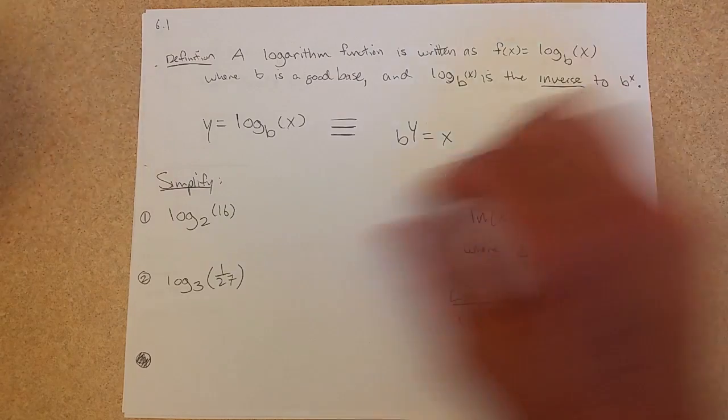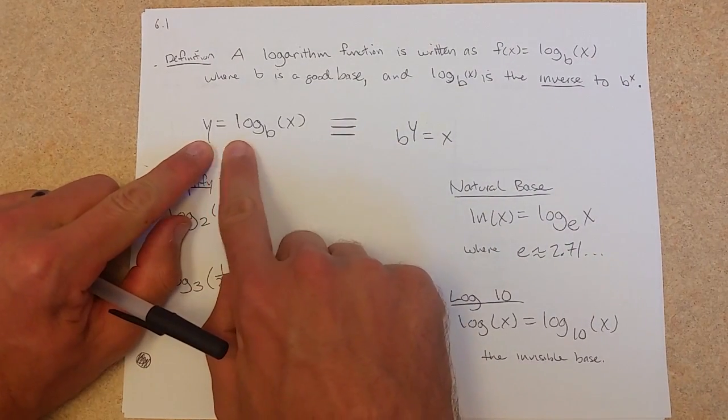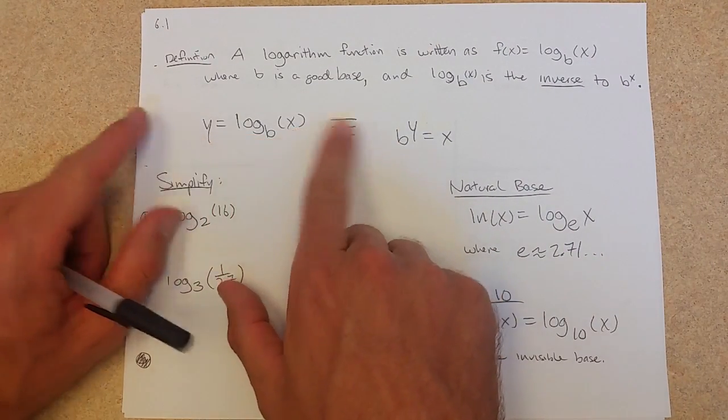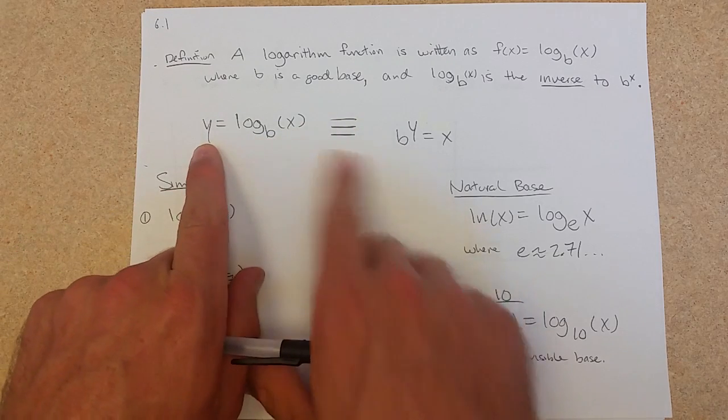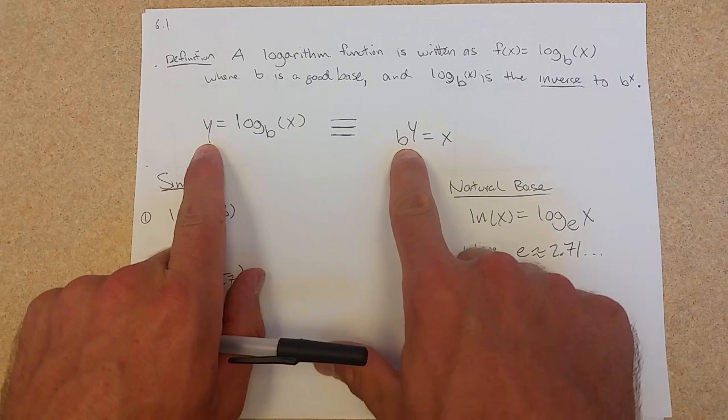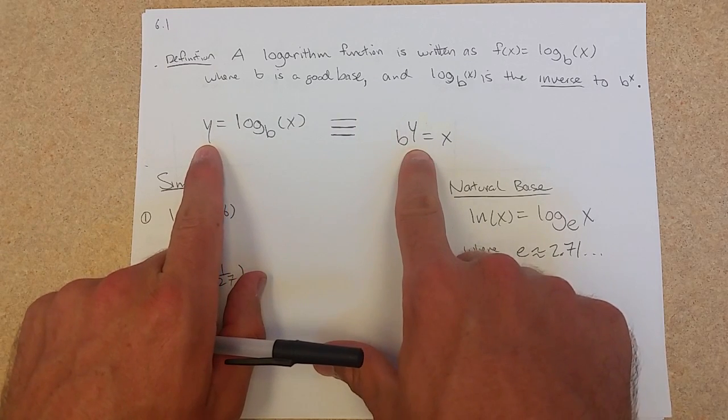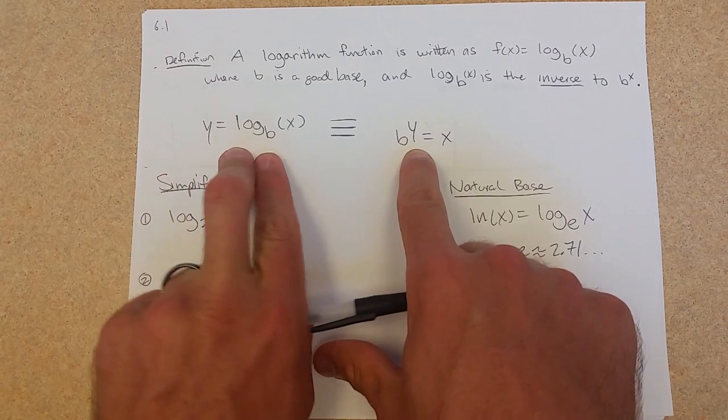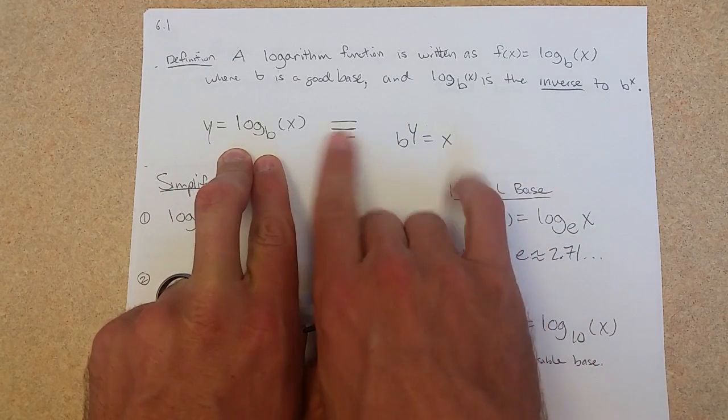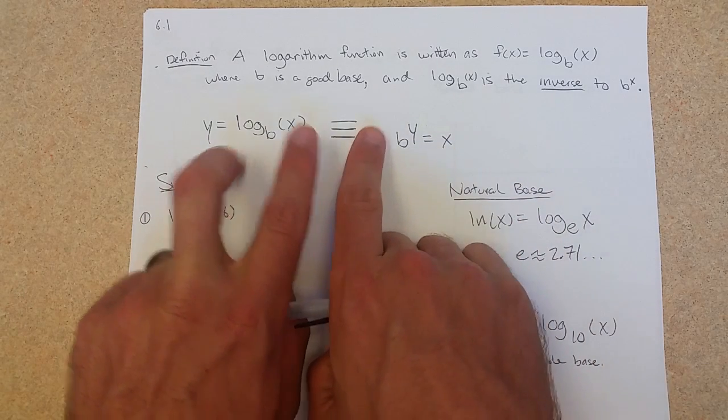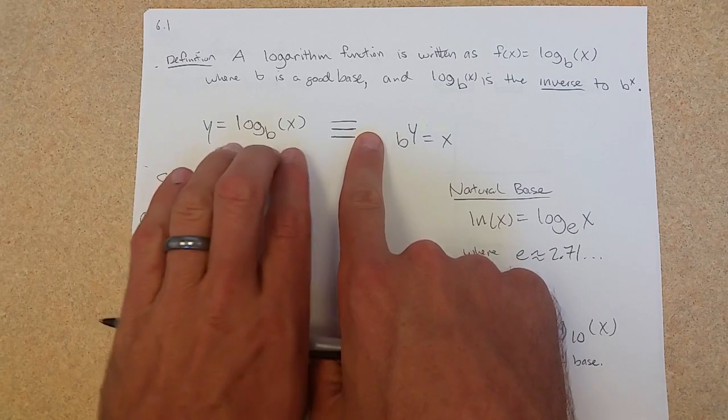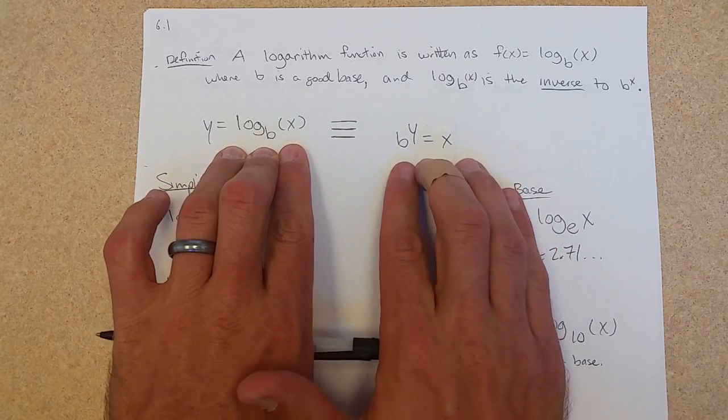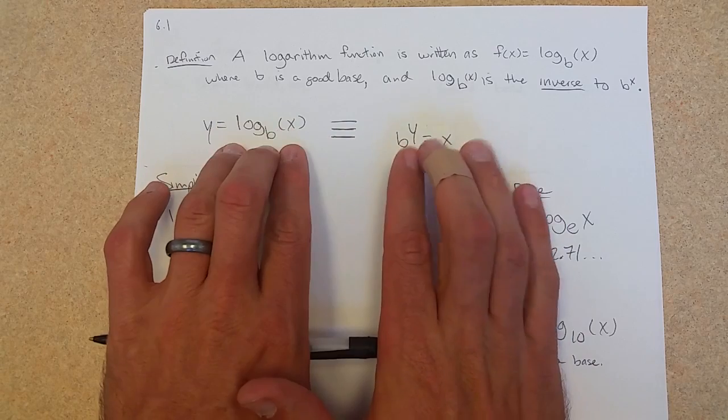What does the inverse look like? If you have y equals log base b of x, you can flip this around. Move the base to the other side, but now it's an exponential function. I have to use a triple equal sign because I'm showing this equation is the same as this equation.